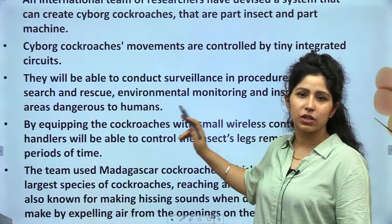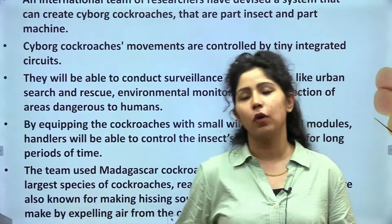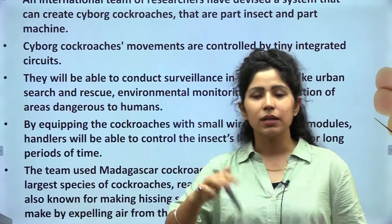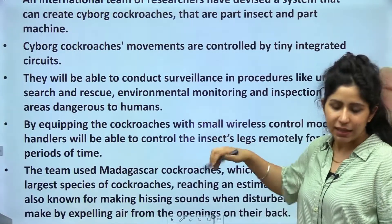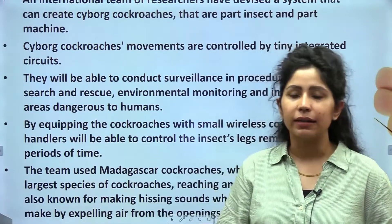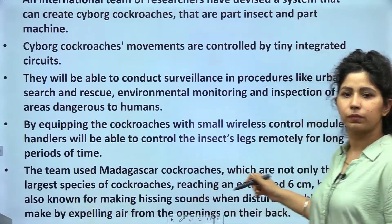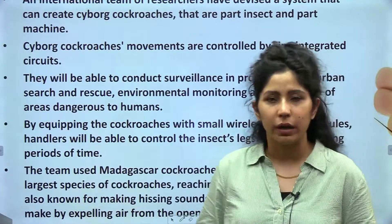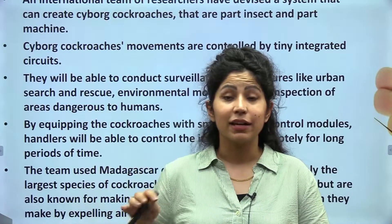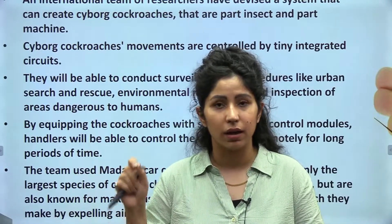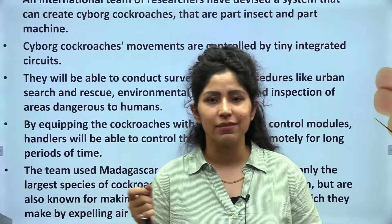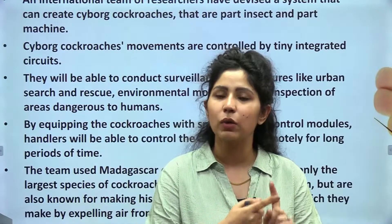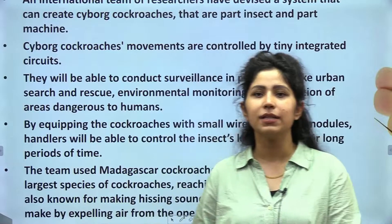Cyborg cockroaches can also be helpful in urban search and rescue operations when a building falls and it is hard to locate people. For environmental monitoring, especially soil quality and groundwater levels at depth, these can be deployed. For inspection of areas dangerous to humans — especially for radiation levels — for example, the Zaporizhia nuclear power plant in Ukraine: if you want to find out whether there is a radiation leak, you can send these cockroaches there, and even if radiation levels are high, the cockroach will survive and provide data.